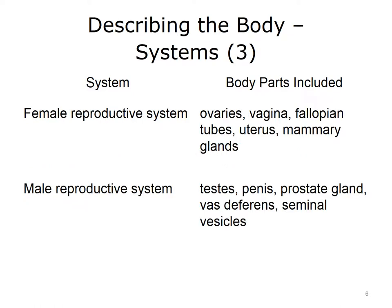The female reproductive system includes the ovaries, vagina, fallopian tubes, uterus, and mammary glands. This system secretes hormones, produces ova — the plural of the Latin word ovum, meaning egg — and regulates menstruation, pregnancy, and milk production from the breasts. The male reproductive system includes the testes, penis, prostate gland, vas deferens, and seminal vesicles. This system secretes hormones and produces sperm. Sometimes these two systems are combined and referred to generally as the reproductive system.